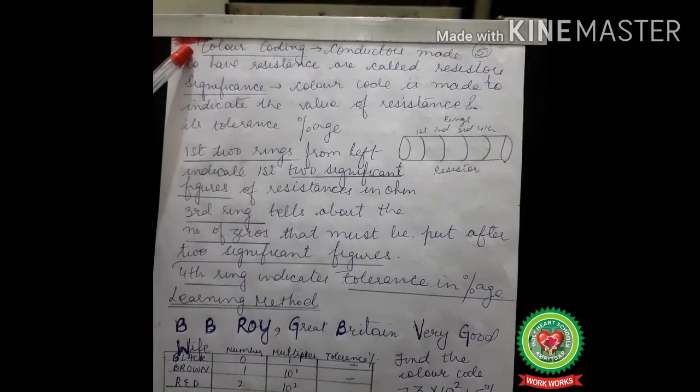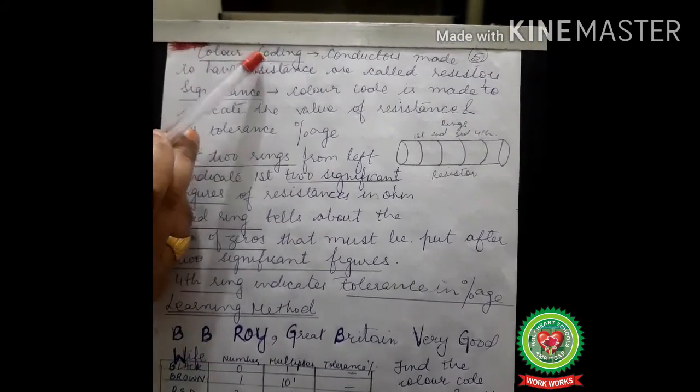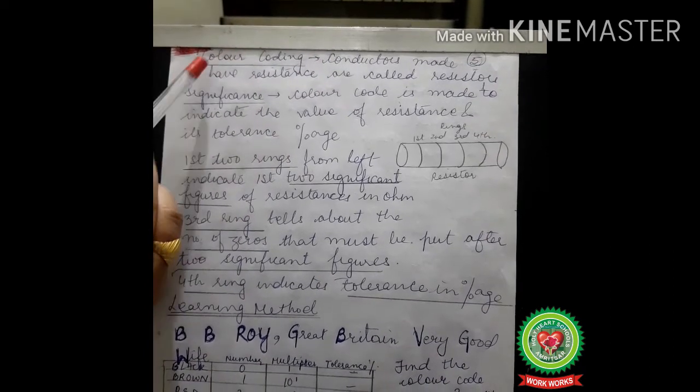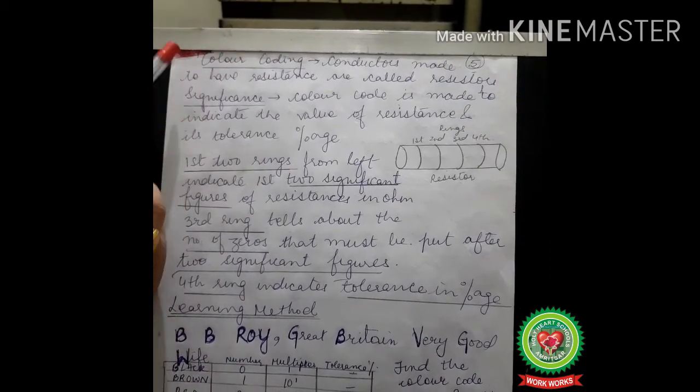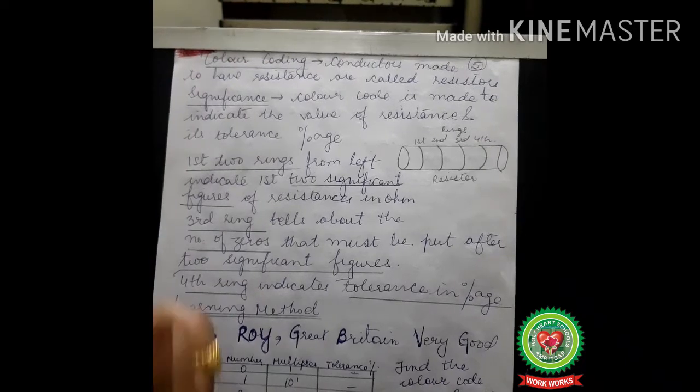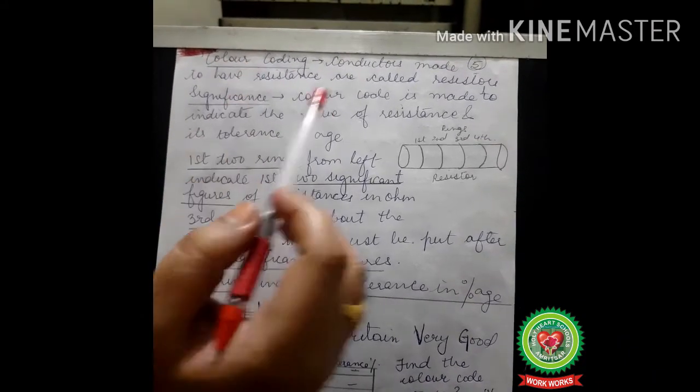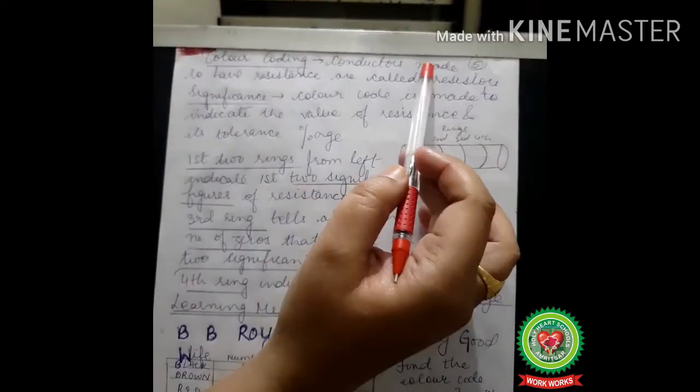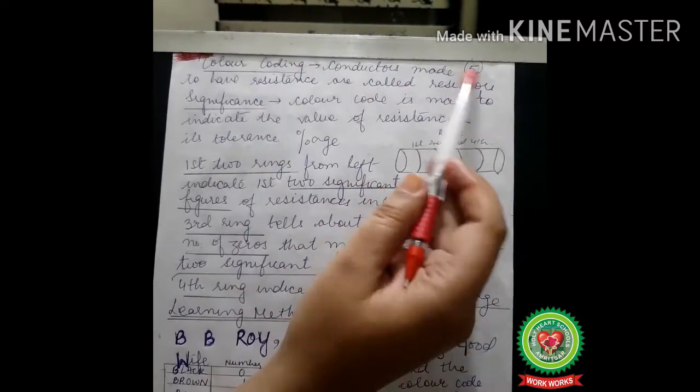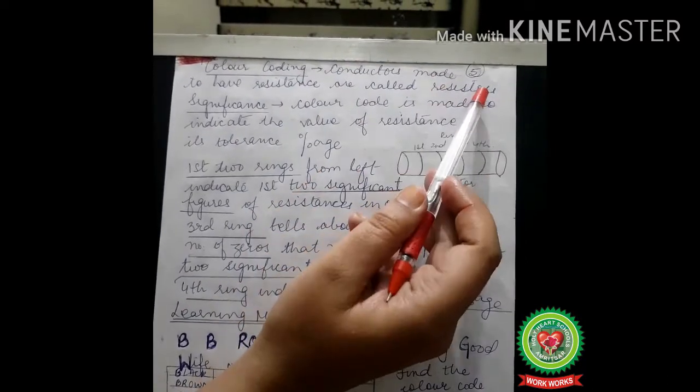Hello students, today we shall be discussing the topic of color coding. Color coding is a fresh topic and it is not linked with other topics, so we shall be taking it individually. Before discussing color coding, we should know what resistors are. Conductors made to have resistance are called resistors.